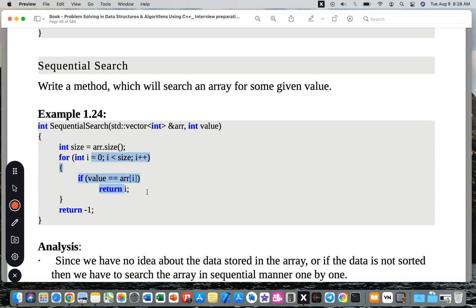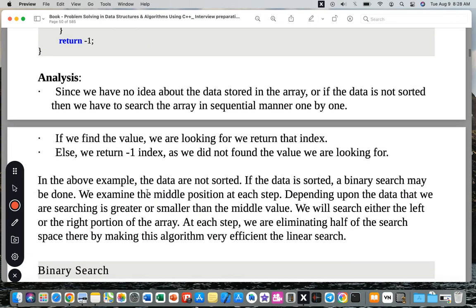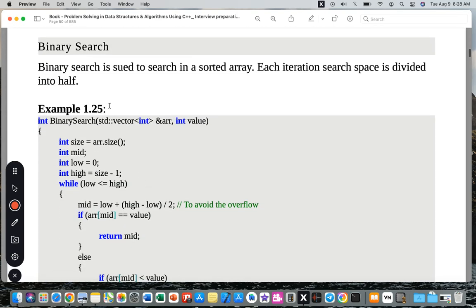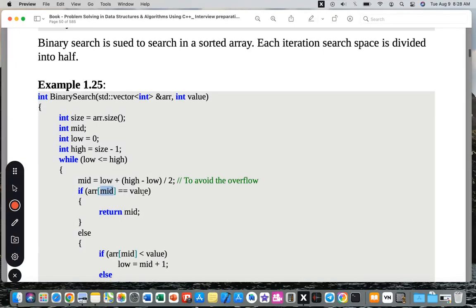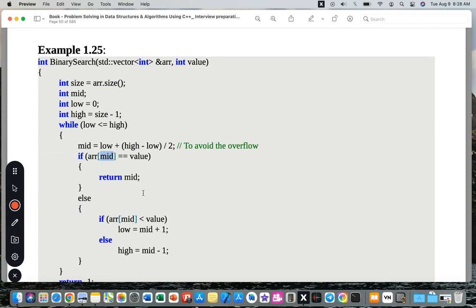Binary search is used to search a sorted array. Each iteration, the search space is divided into half. In this case, we only check the mid value and either go up or go down from there. So we are searching only half the values, which is way more efficient.